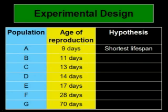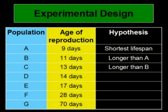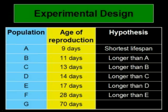We expect that the population that reproduces at the youngest age, population A, will have the shortest lifespan. We expect that population B to live longer than population A, and so on. And finally, we expect population G, which has the longest generation time, to also have the longest lifespan.